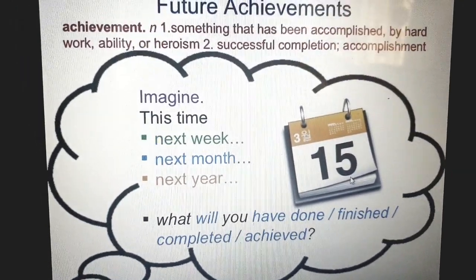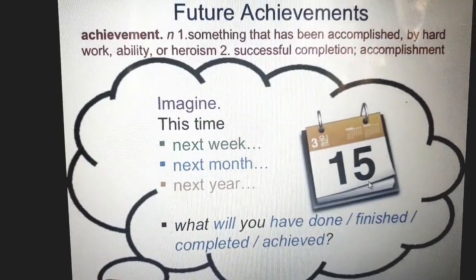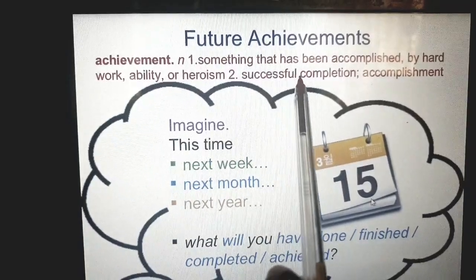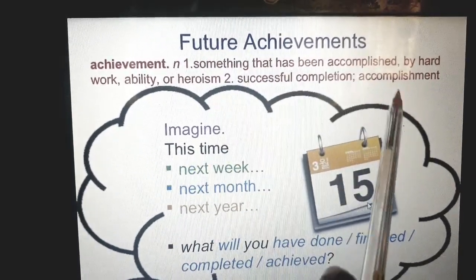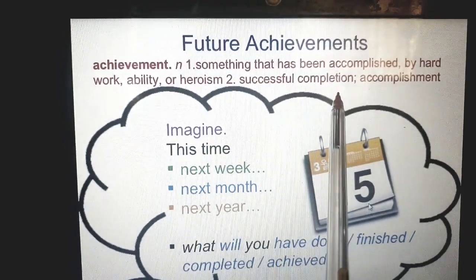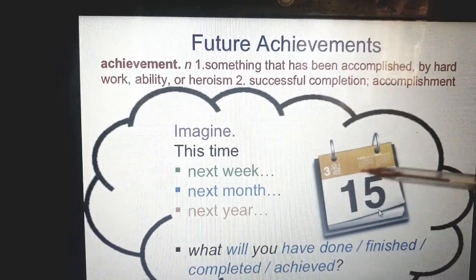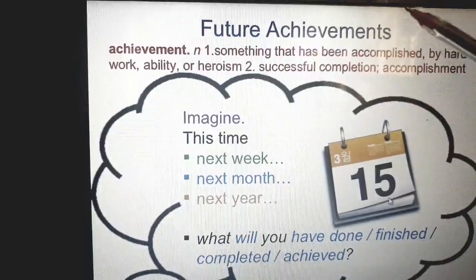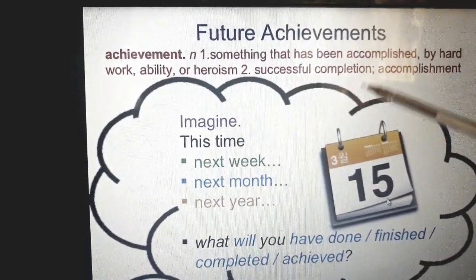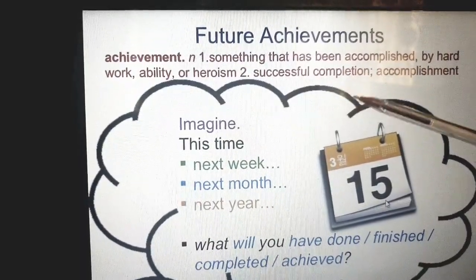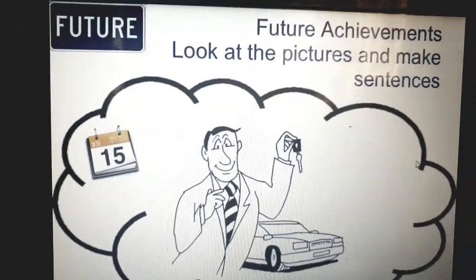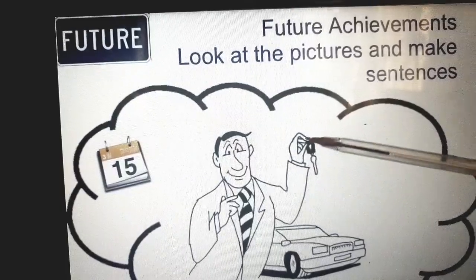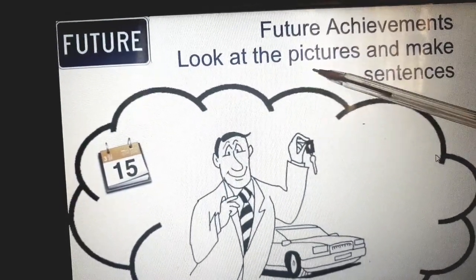Now let's see this exercise and do it together. When I say achievement, it means something that has been accomplished by hard work, ability — a successful completion, an accomplishment. So in general, when I want to talk about the future perfect simple, I'm talking about future achievements — things that will be completed or achievements that will be completed in the future. Let's do this exercise together. This is a future achievement — look at the pictures.